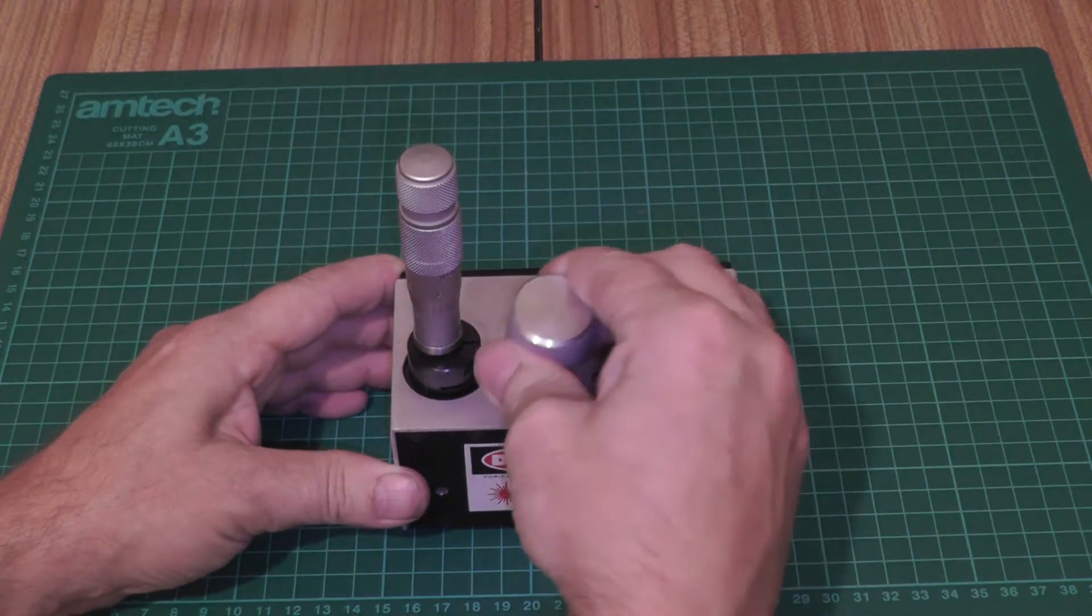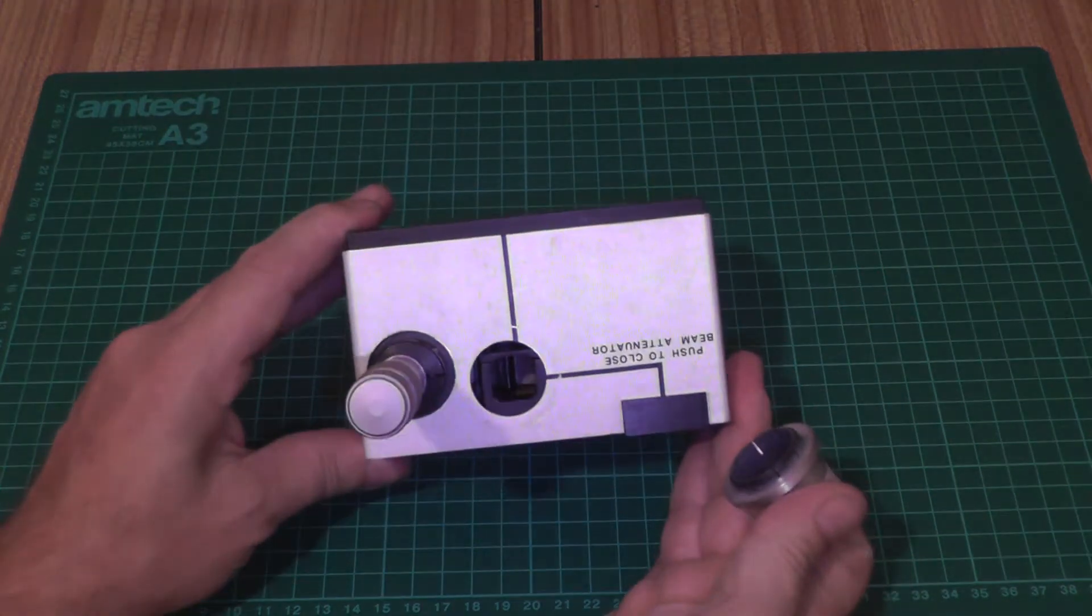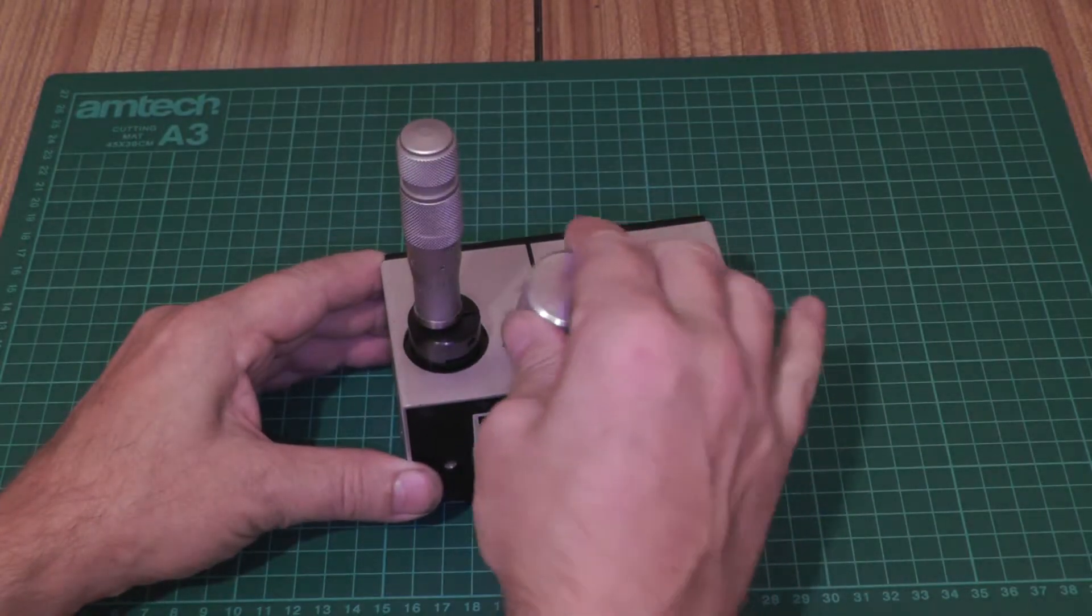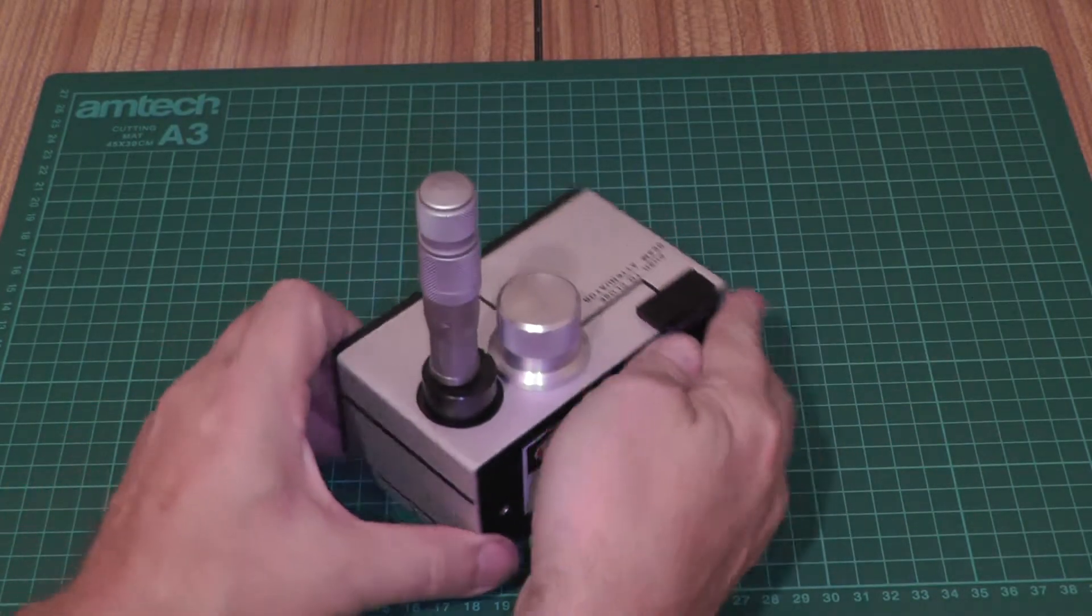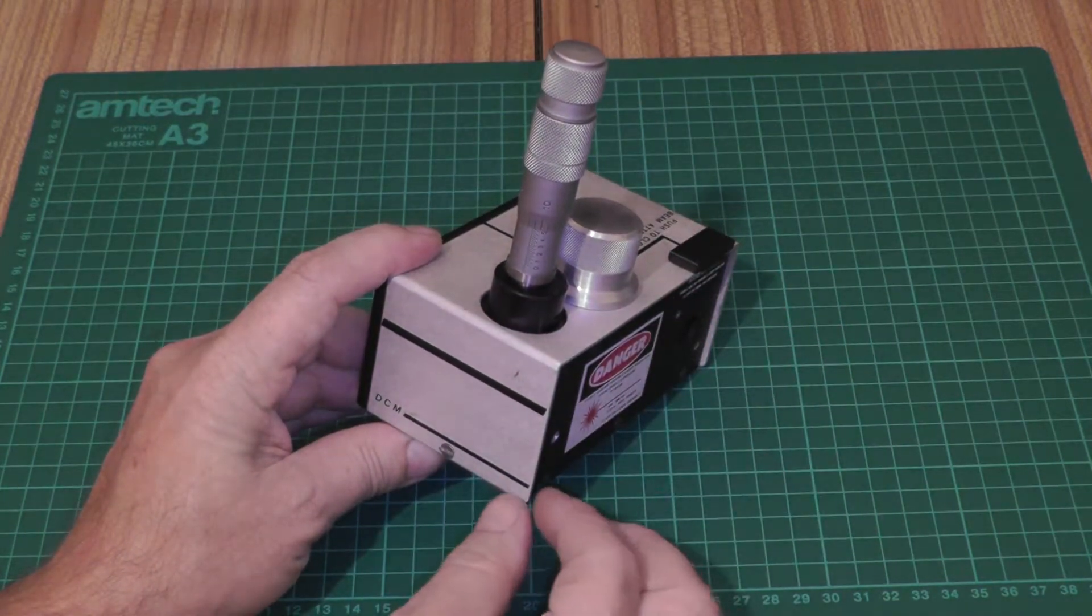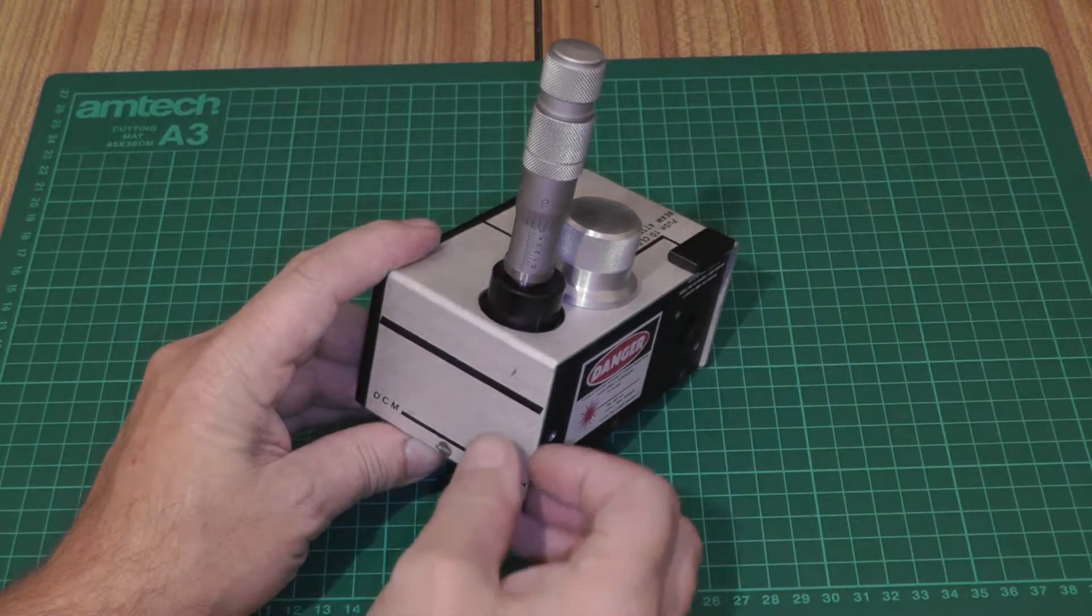On the top we've got a lid, and this is where you would put the cuvette. Then most importantly for this dye laser it's actually got a micrometer head where we can adjust the angle of the grating and change the wavelength.